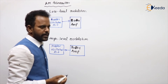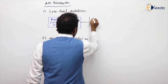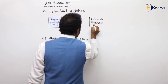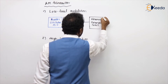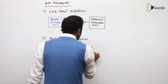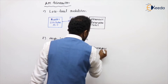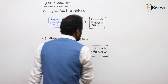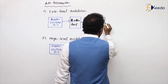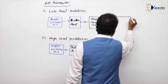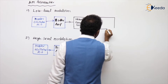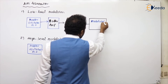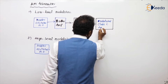After the buffer amplifier, we have the harmonic generator (HG), which is also present in both types. Now the difference comes after the harmonic generator. In low level modulation, we have a modulated class C amplifier — which is essentially a power amplifier — where modulation takes place.